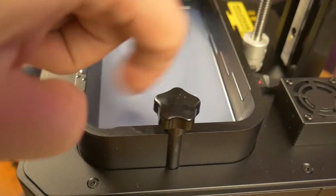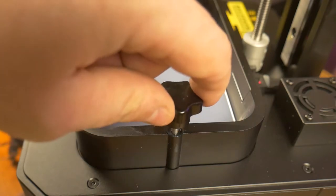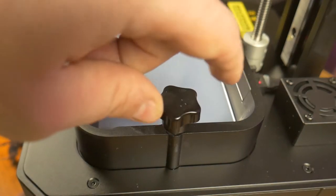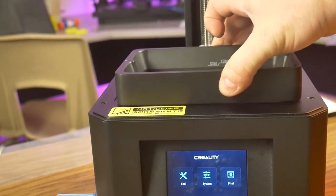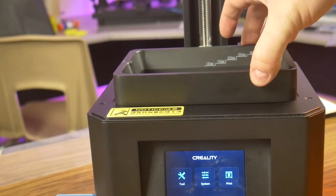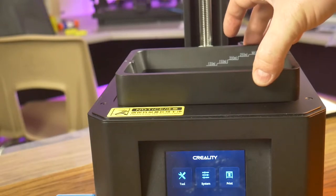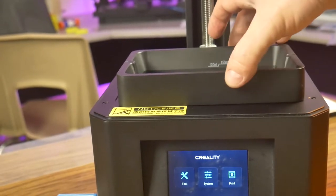The only issue with the way the thumb screws are set up is that third party replacement vats will not work with this printer. On top of the thumb screw issues, since a recess is provided for the resin vat to sit in, other brands won't fit in the provided recess.